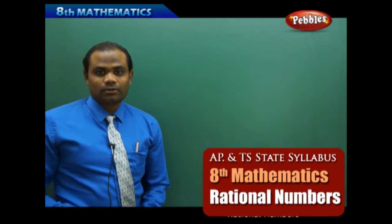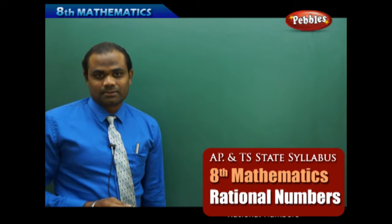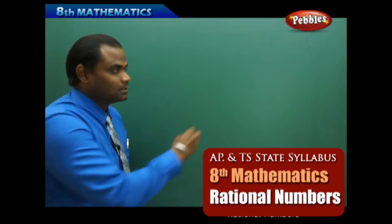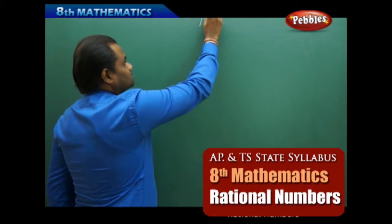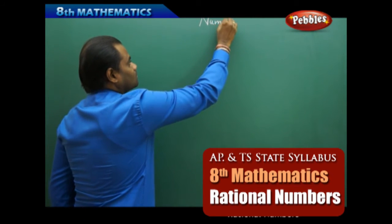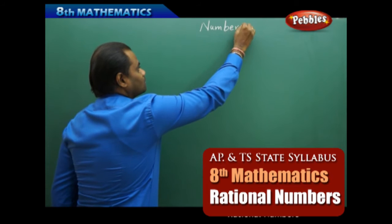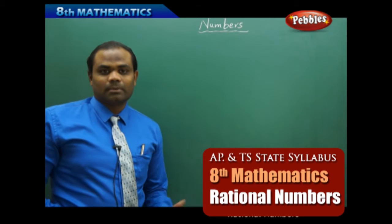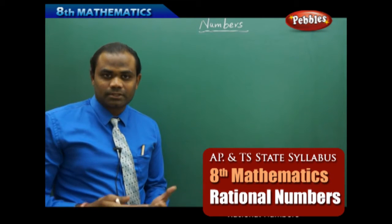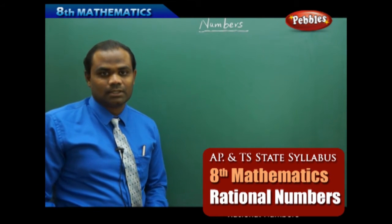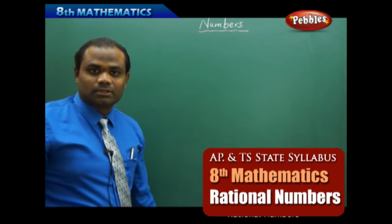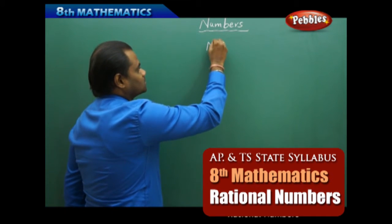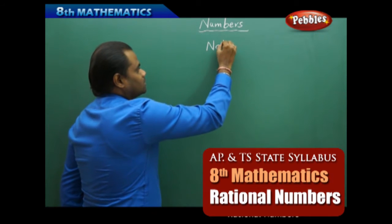Numbers has been the most important aspect of mathematics, and today we're going to discuss about numbers and the number system. Starting with numbers, we have seen different types of numbers in the past when discussing various aspects of mathematical content. Today we'll be discussing on numbers, and the first and foremost type is natural numbers.